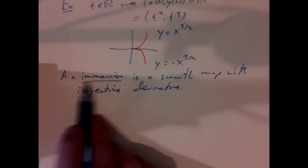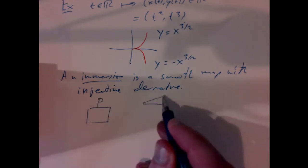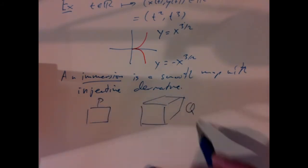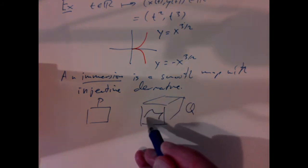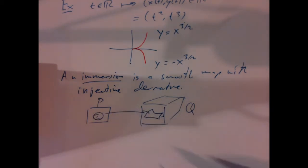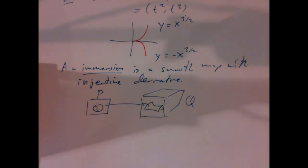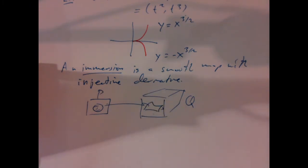By the rank theorem, if we have an immersion from P to some Q, then there must be little pieces of P which get mapped so that they're embedded — little open sets. The rank theorem tells us that the map is linear in small enough open sets of P in suitable charts, and a linear map with injective derivative is in fact injective, and so those pieces are embedded submanifolds.